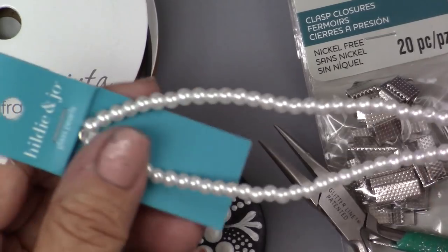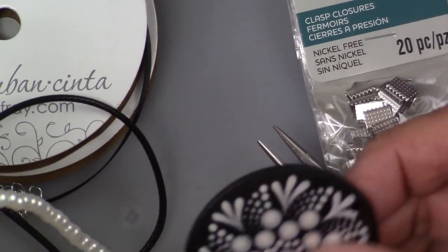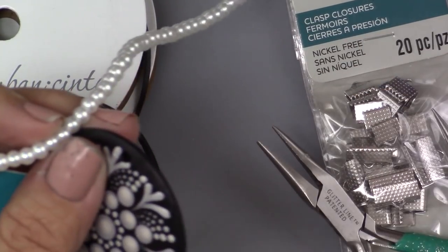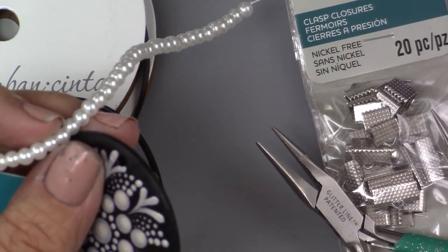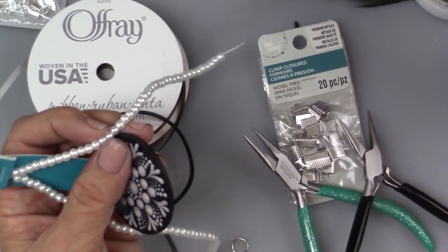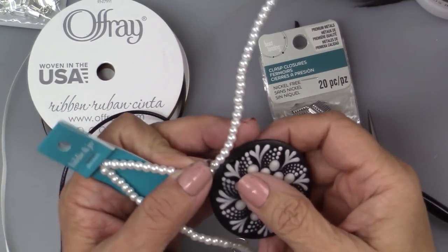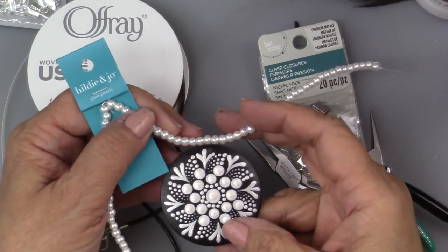We could also introduce some beading. We could add some pearls. These are just glass pearls. I think they would be really pretty. And in a future video, I think we'll do a little bit of bead stringing. That would be nice, I think.